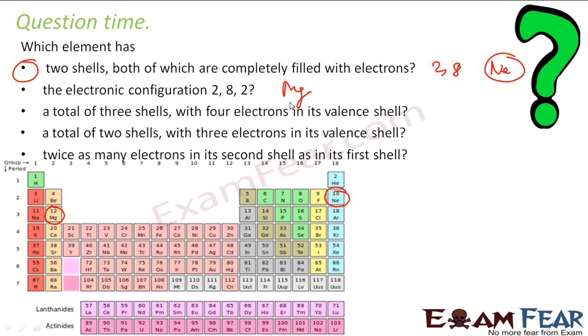A total of three shells with four electrons in valence shell. So I have three shells and four in the valence one: 2, 8, 4. 2, 8, 4 is 2 plus 8 is 10 plus 4 is 14. 14 is silicon. This is silicon.